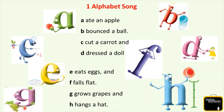Next, G - what is G doing? G is trying to grow grapes. And H - maybe H is coming home now and he hangs his hat on a stand.